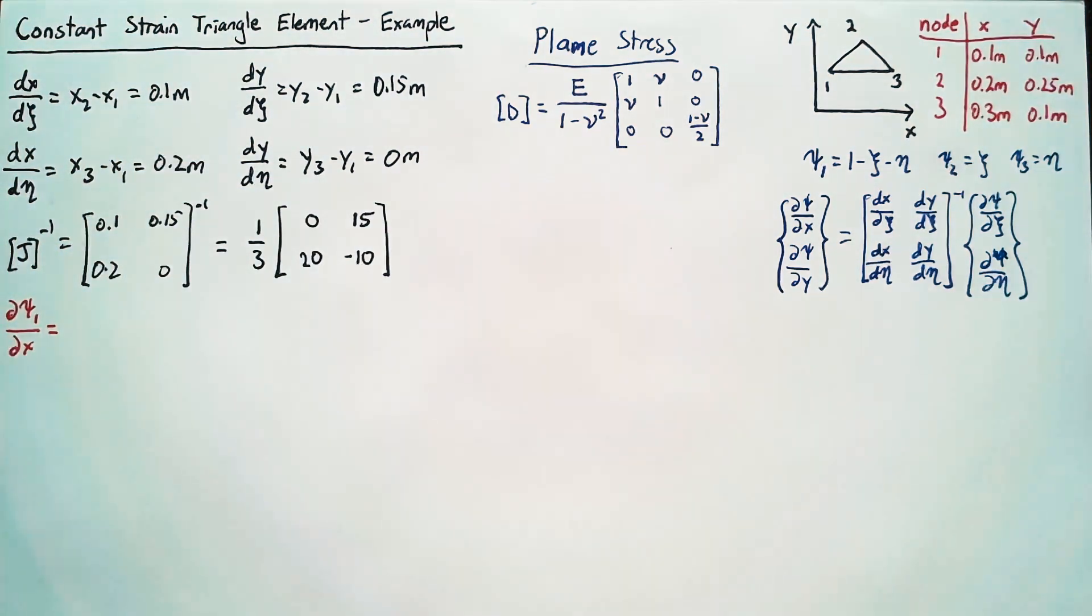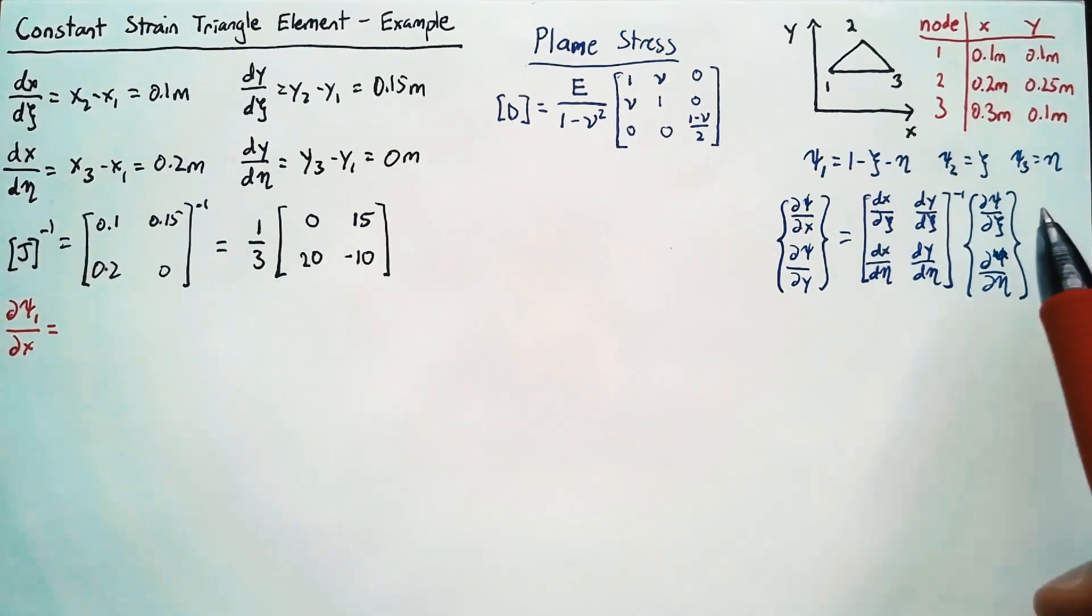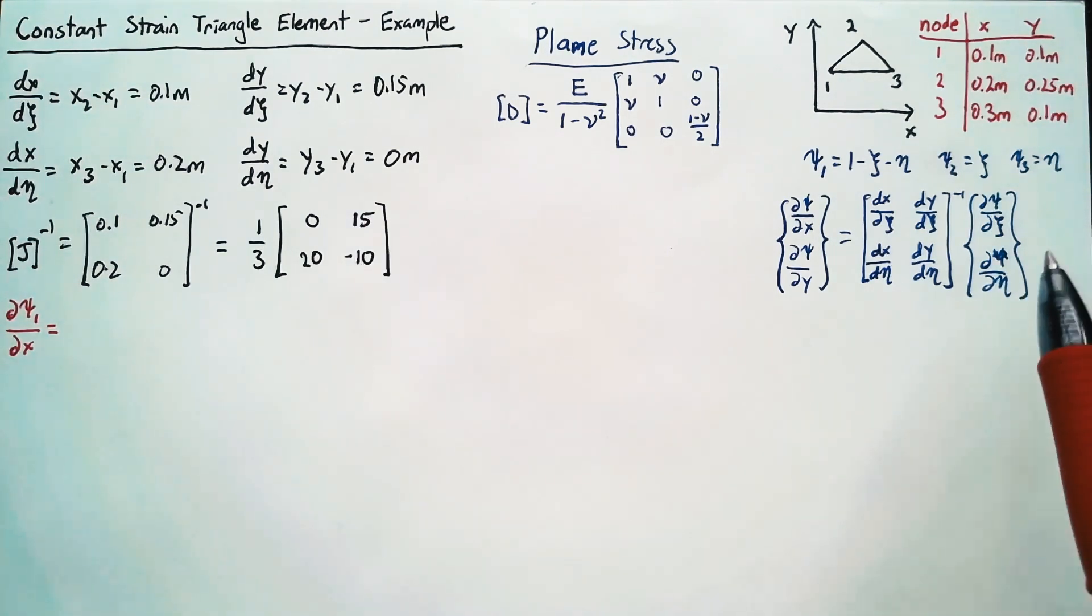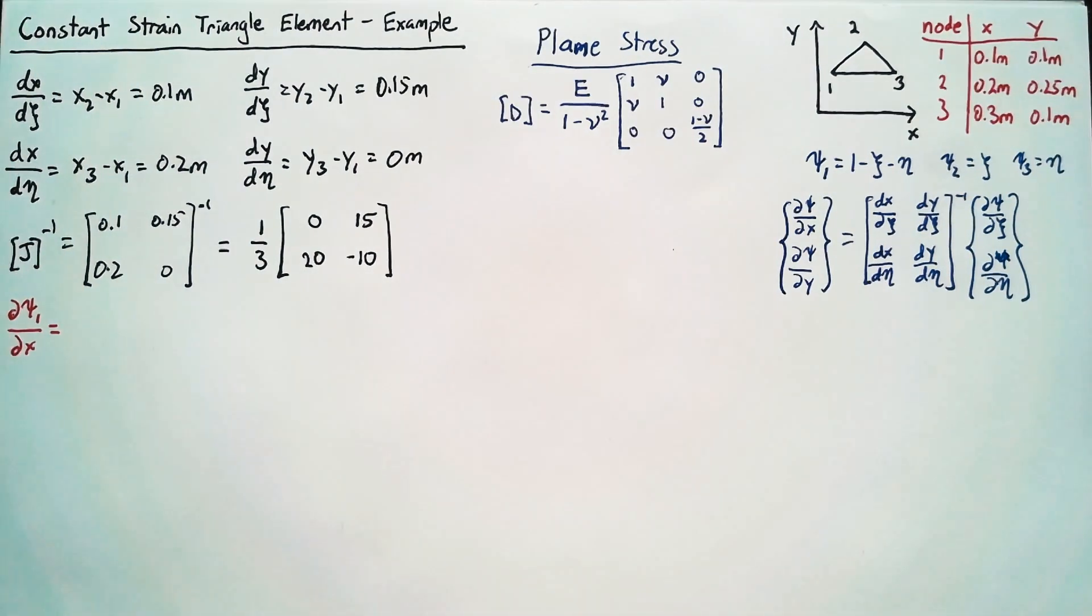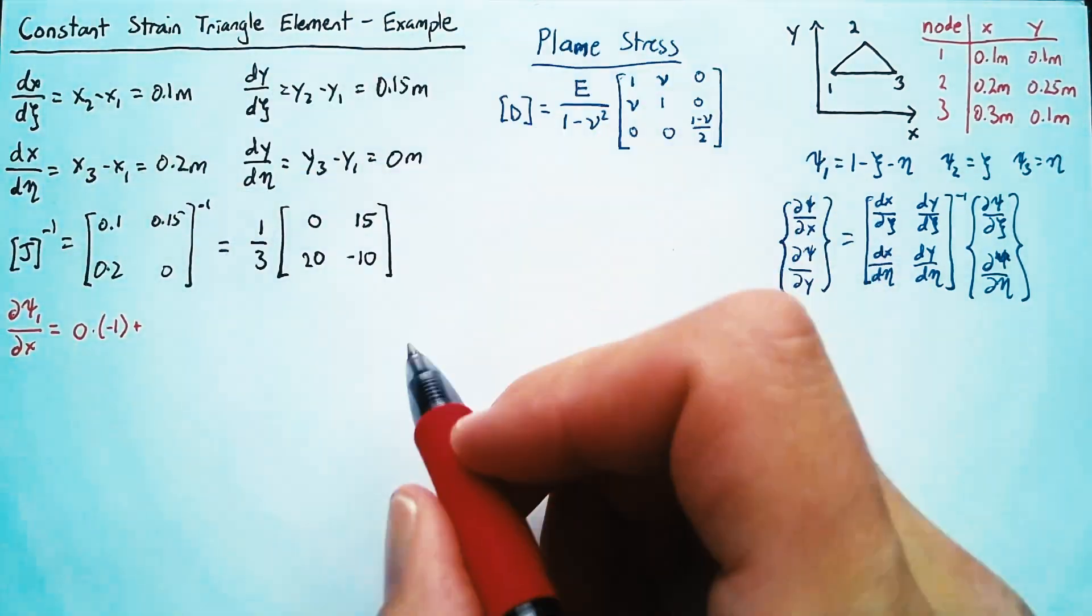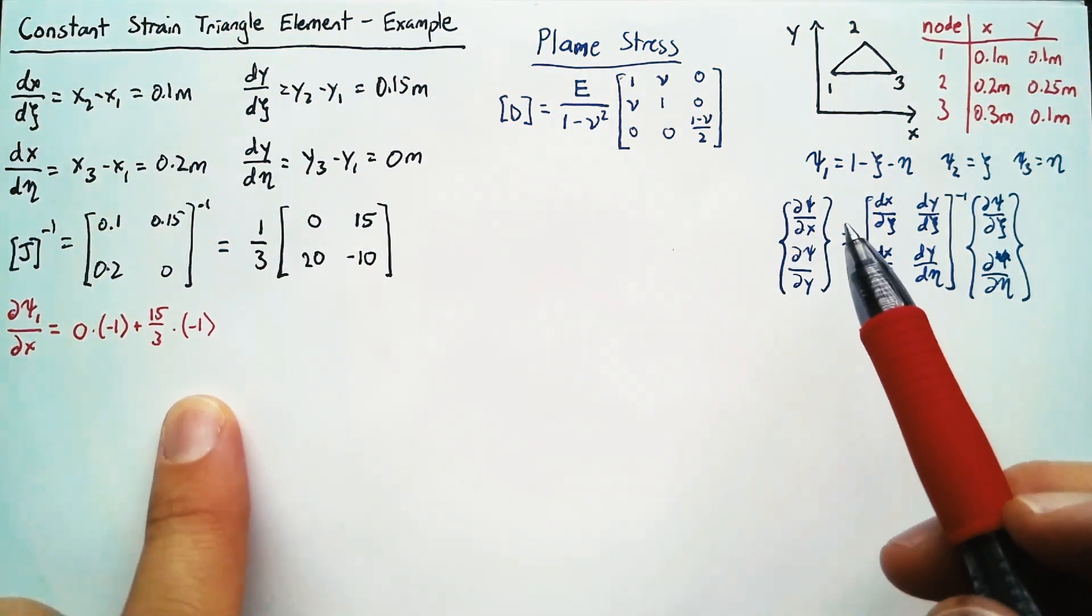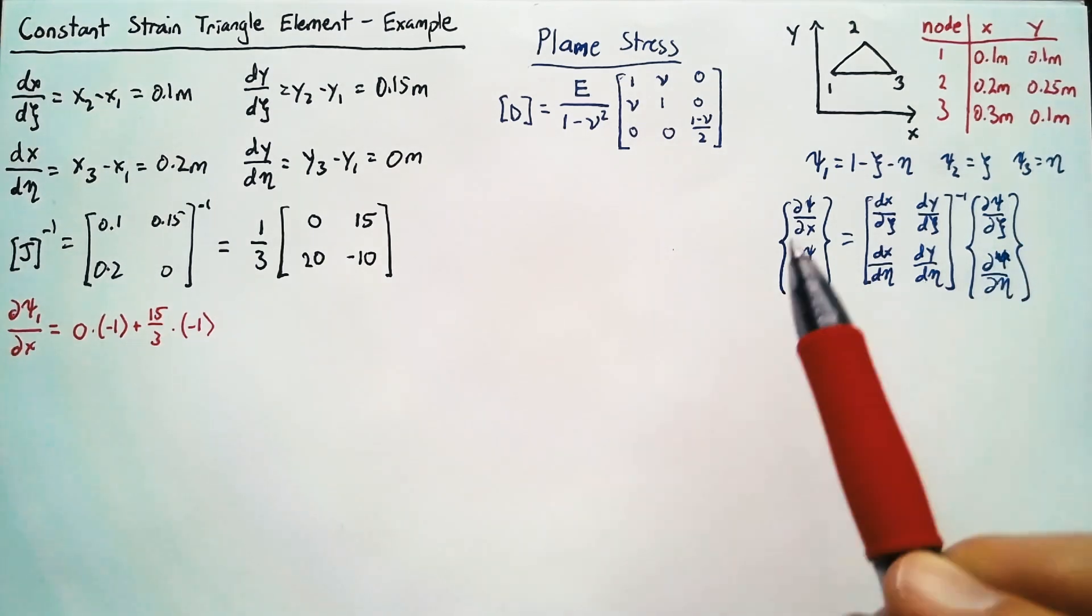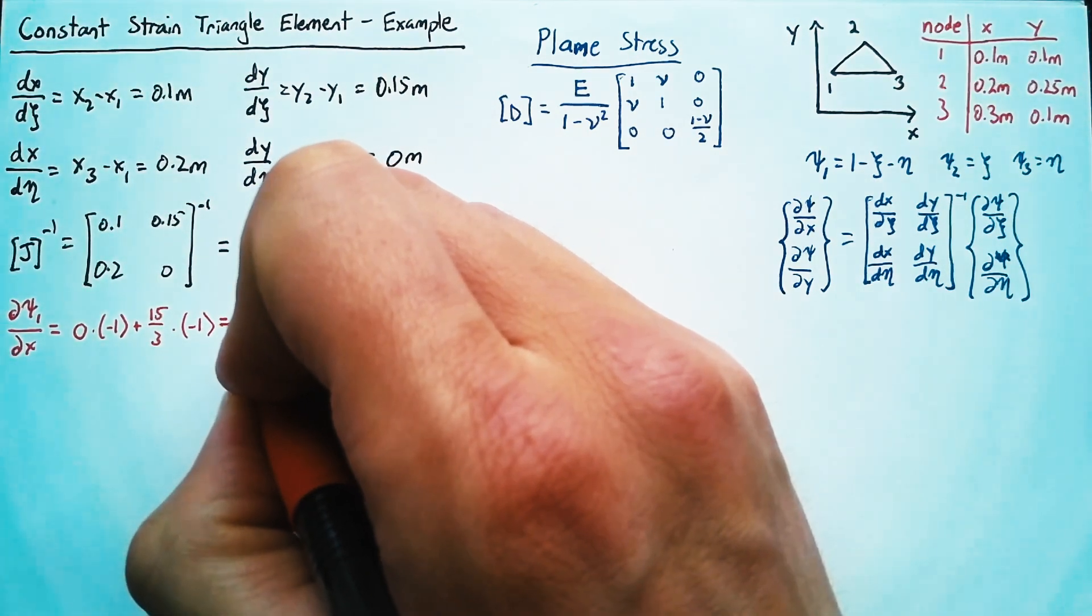Now with this in hand we can easily calculate the various values for d psi i dx and y. So for instance d psi 1 dx is going to be this 0 multiplied by d psi 1 dx plus 15 multiplied by d psi 1 d eta divided by 3. So this ends up being 0 multiplied by negative 1 plus 15 thirds multiplied again by negative 1 since the derivatives in both cases are just equal to negative 1 for d psi d xi and d psi d eta. And so our final result here is simply negative 5.